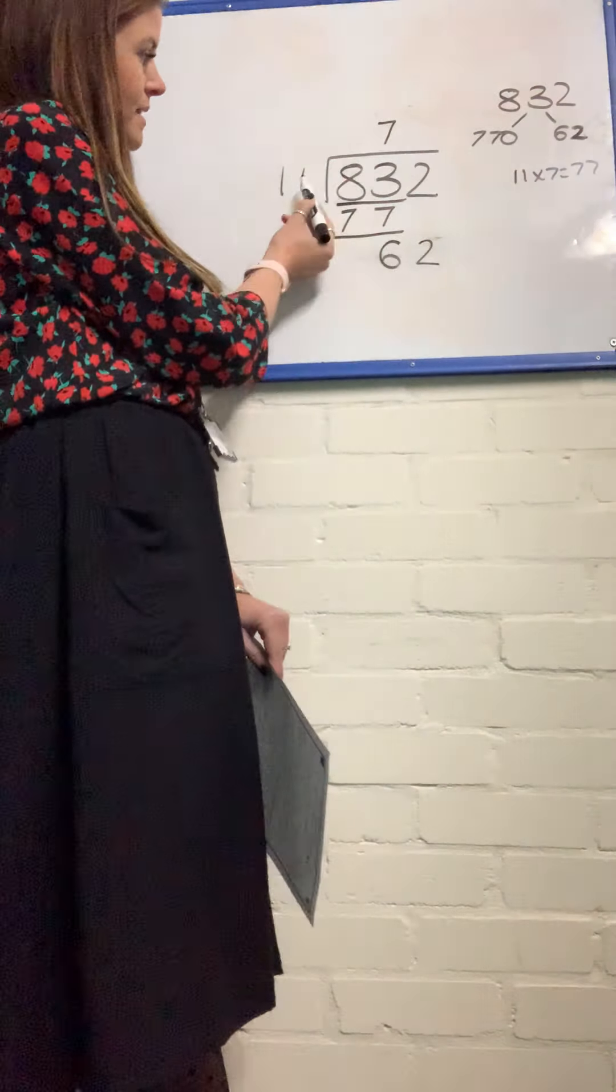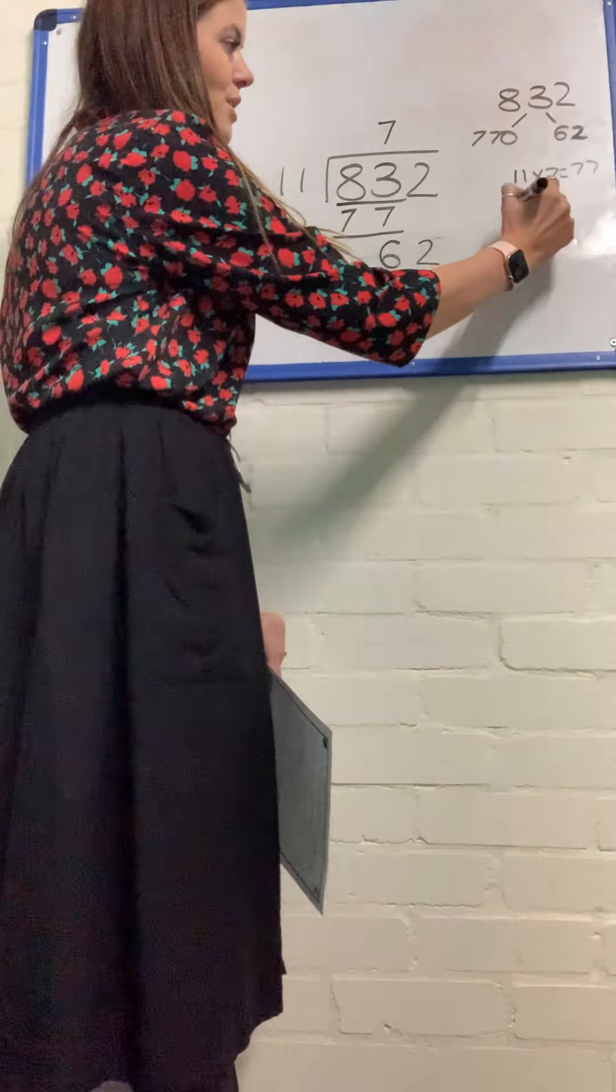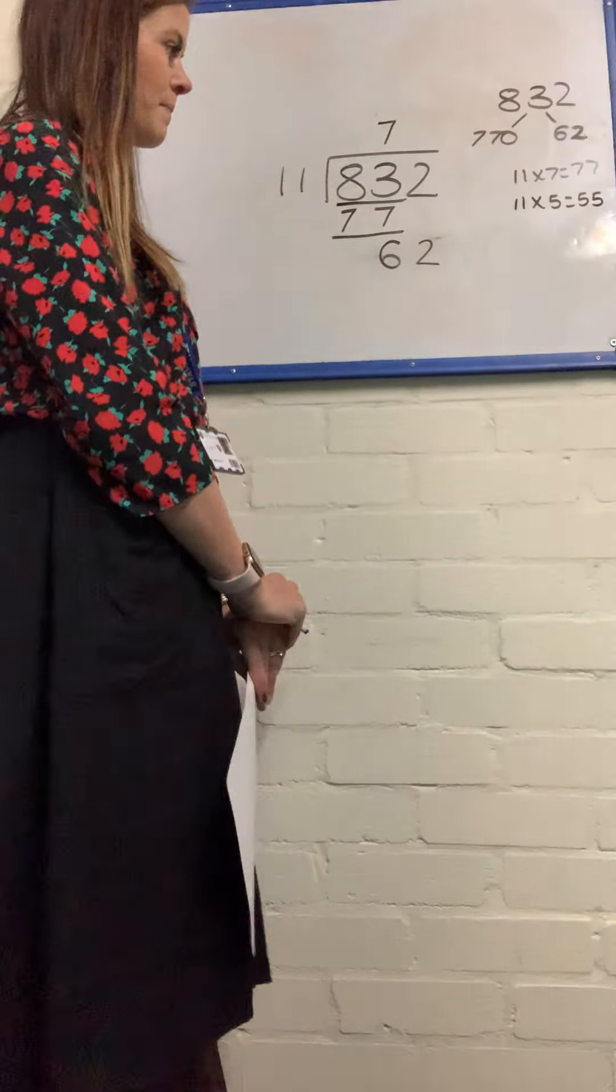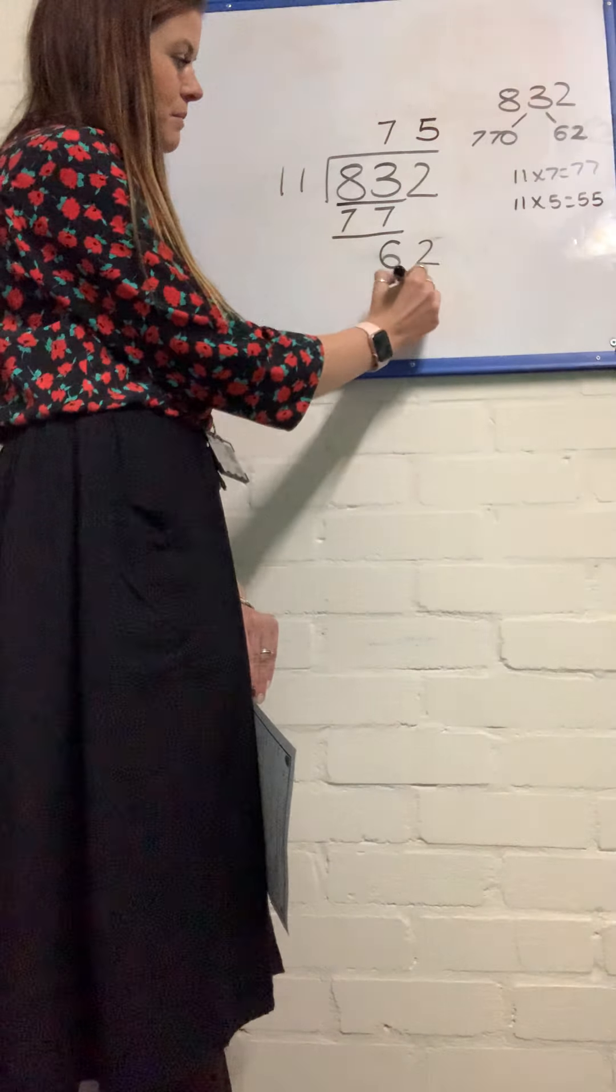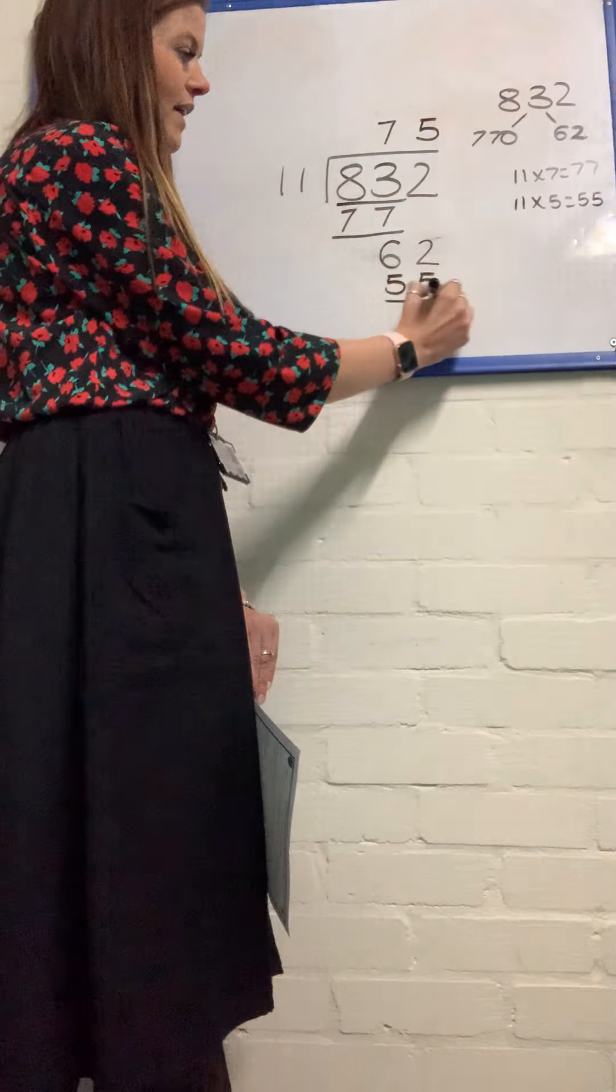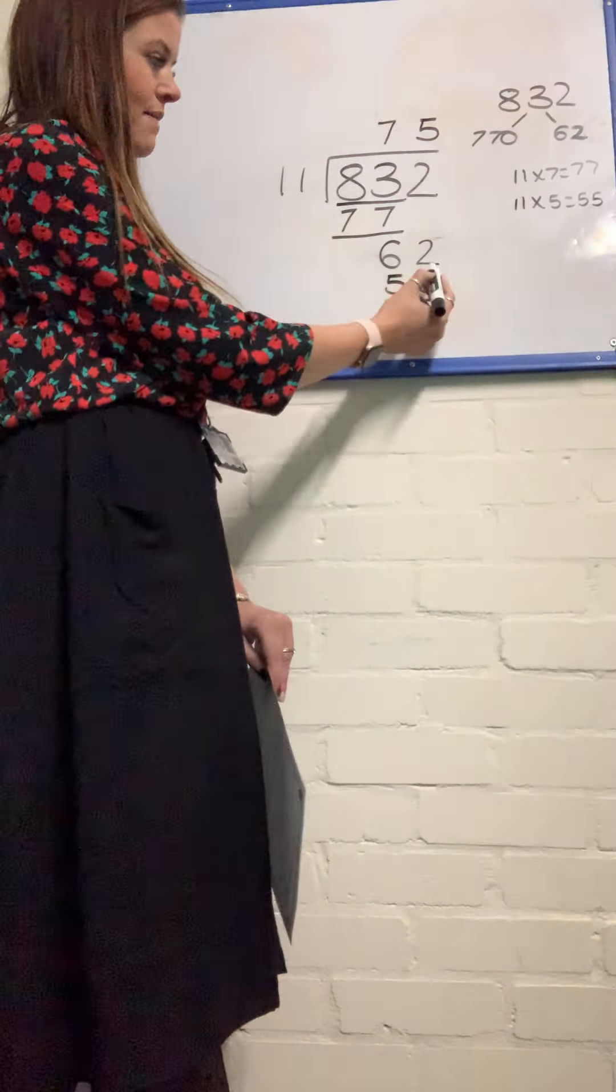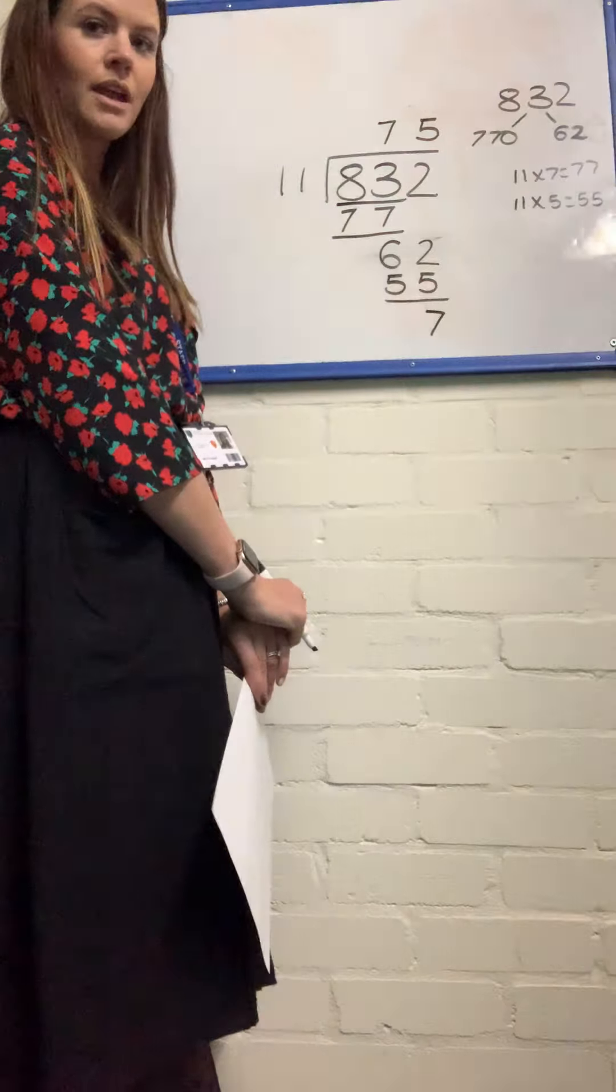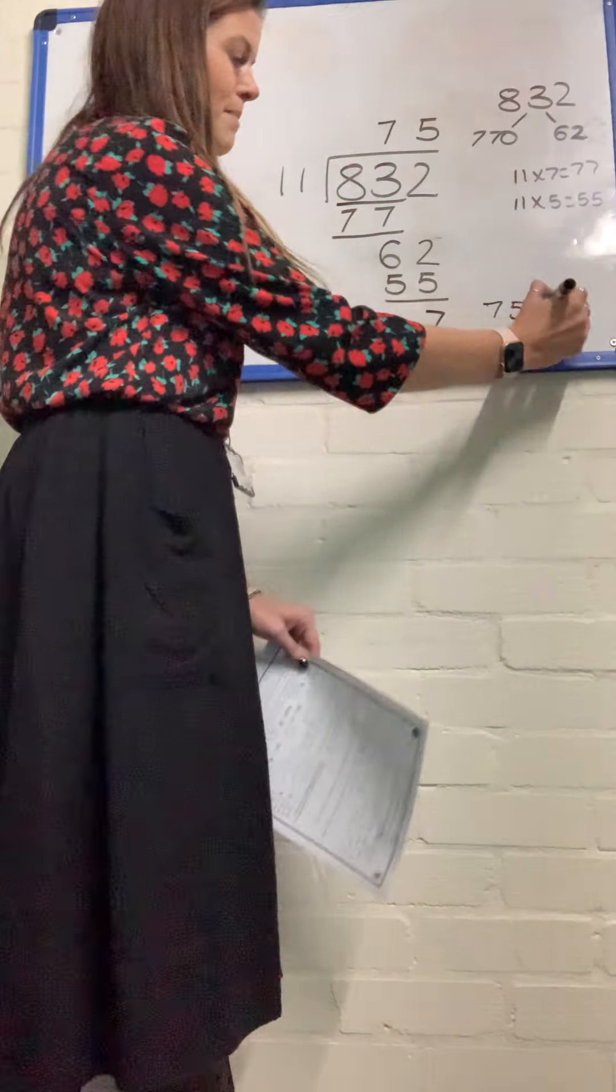So I'm now saying to myself, how many 11s go into 62? Well, I know that 11 times by 5 is 55. So I've got 5 11s in 62. My closest multiple is 55. And I'm left with working out the difference between those again. The difference between 55 and 62 is 7. So I could leave my answer as 75 remainder 7.